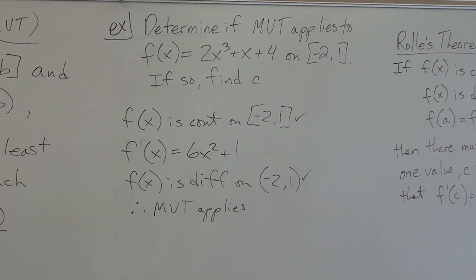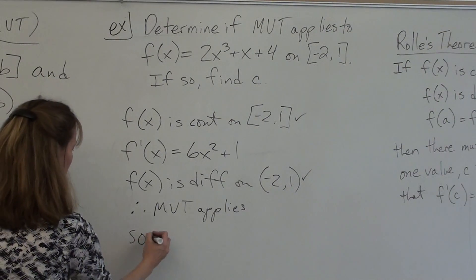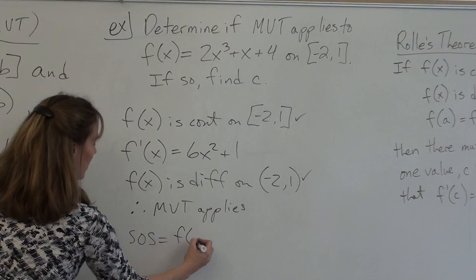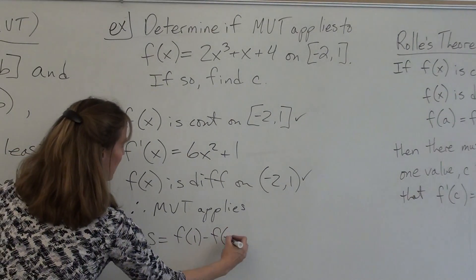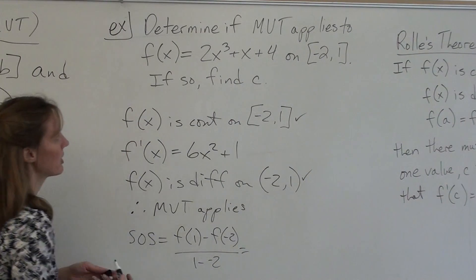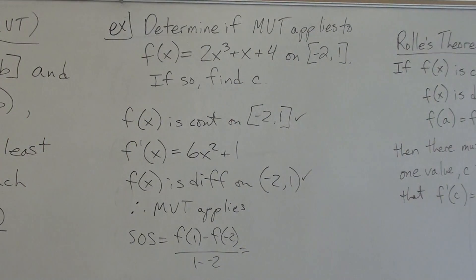To apply it, what's the first thing we have to find? Slope of the secant. So slope of secant, that would be f(1) - f(-2) over 1 - (-2). Change in y over change in x. Everyone take a second to find slope of secant.